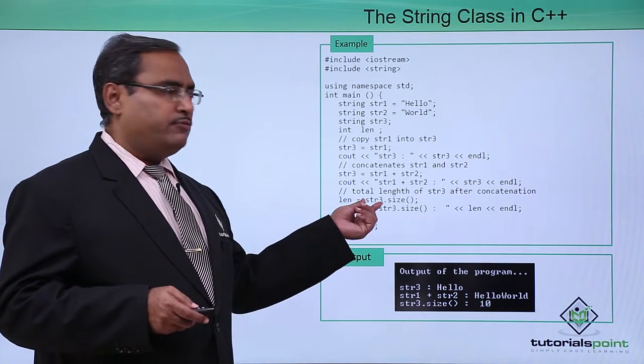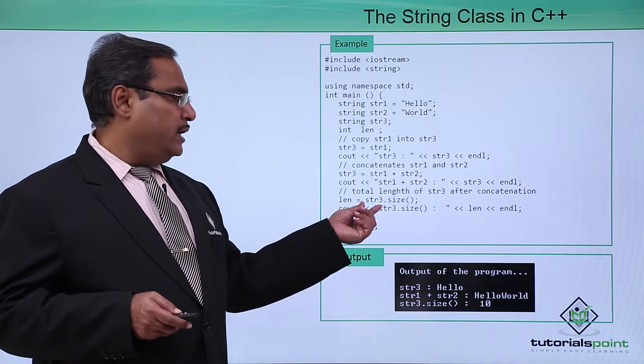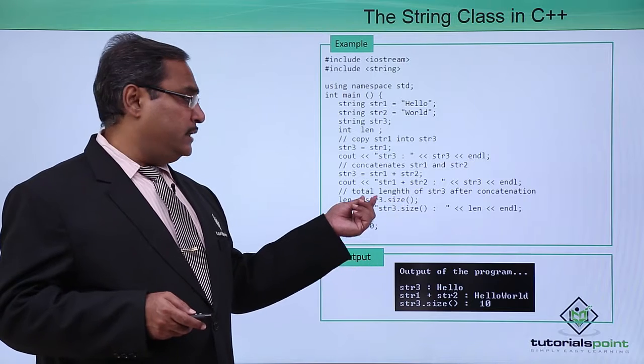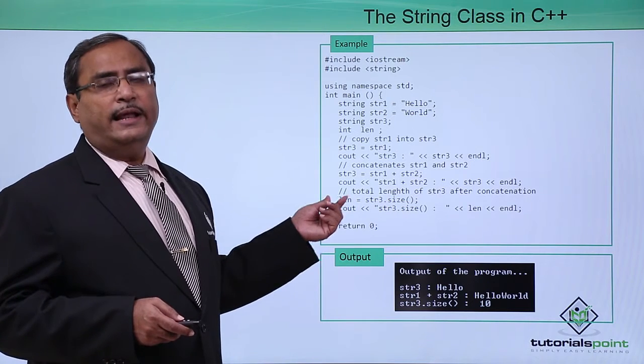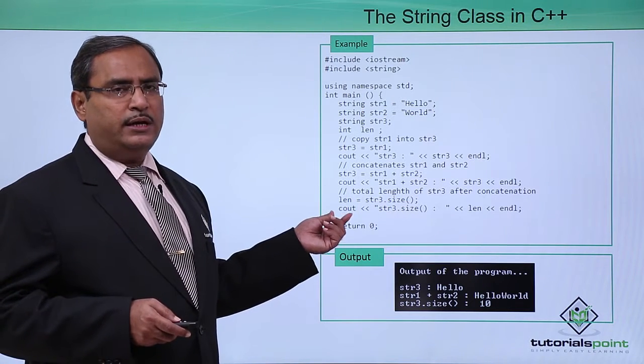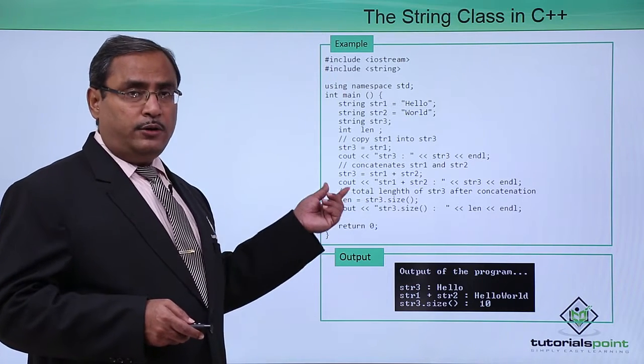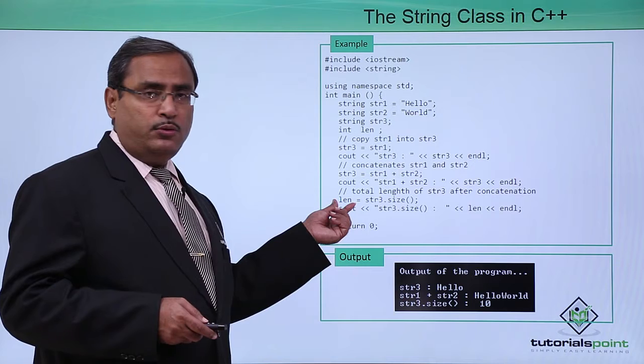Now we are trying to find out the length of this str3 using this particular function that is size. str3 dot size and then the length will get initialized with the respective output argument, whatever it is being returned, and that value will be assigned to len.